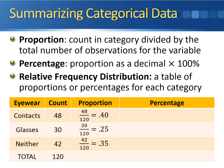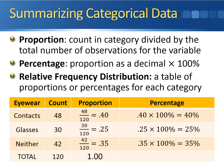Notice that your proportions all have to add up to one. The other measure we can use is the percentage, derived by taking the proportion as a decimal and multiplying it by 100%. The percentage who wore contacts is 0.4 times 100%, giving 40%. The percentage for glasses is 0.25 times 100%, giving 25%. And for neither, 0.35 times 100% gives 35%.